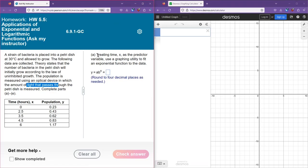So in part A, we want to treat time as x as the predictor variable and use a graphing utility to fit this exponential function to the data. So this is the format that we're trying to fit this data into, y equals a, b to the x. This is an exponential model. So over here, I've got Desmos open, and I'm going to use Desmos as my graphing calculator. And I need to insert the data that we have.